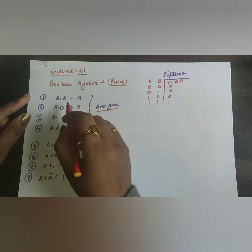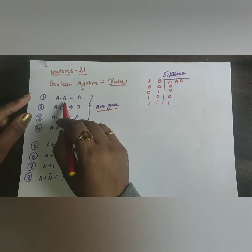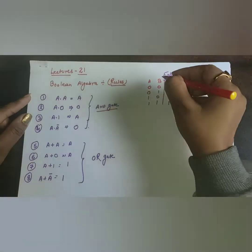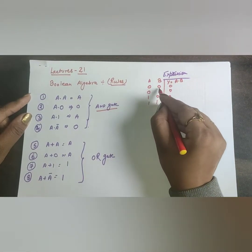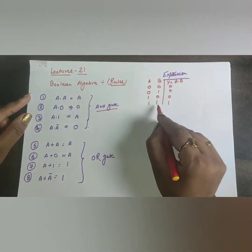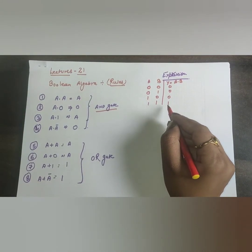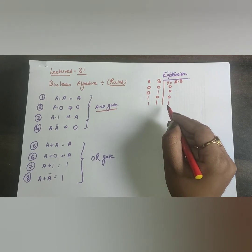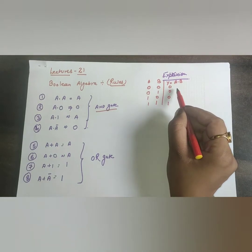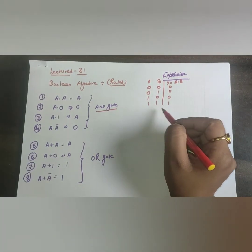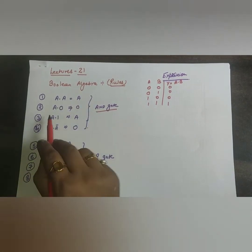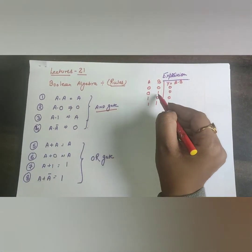Now for AND gate rules in Boolean algebra: A·A — when A=0, 0·0=0; when A=1, 1·1=1. The output depends upon A, so A·A = A. Next, A·0: if A=0, 0·0=0; if A=1, 1·0=0. In both conditions we get 0, so A·0 = 0.